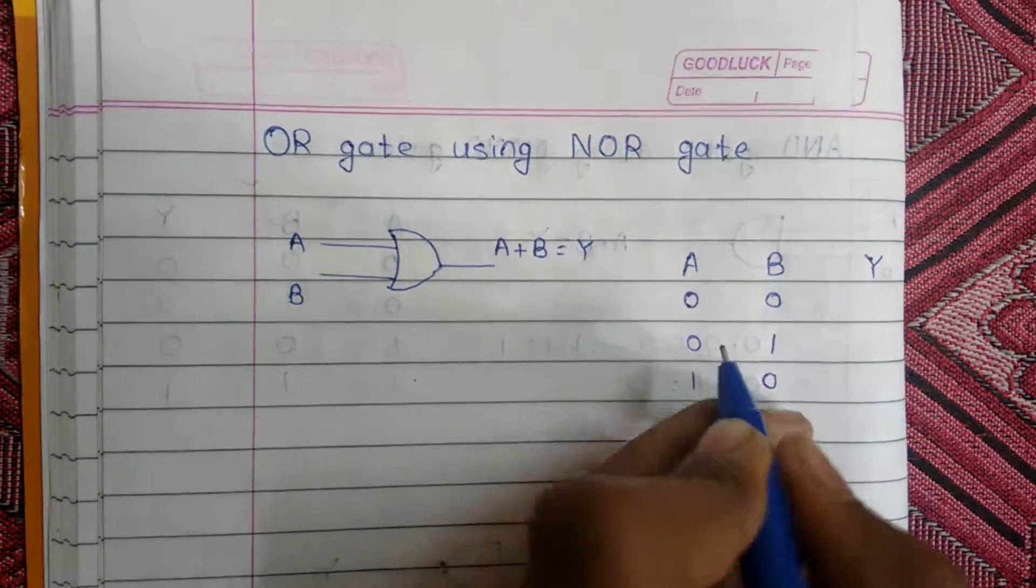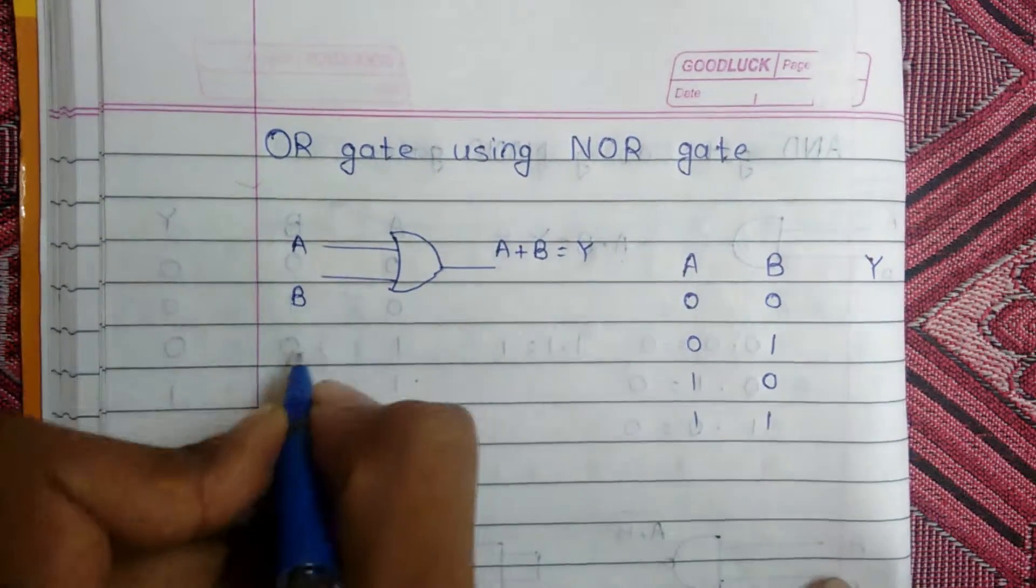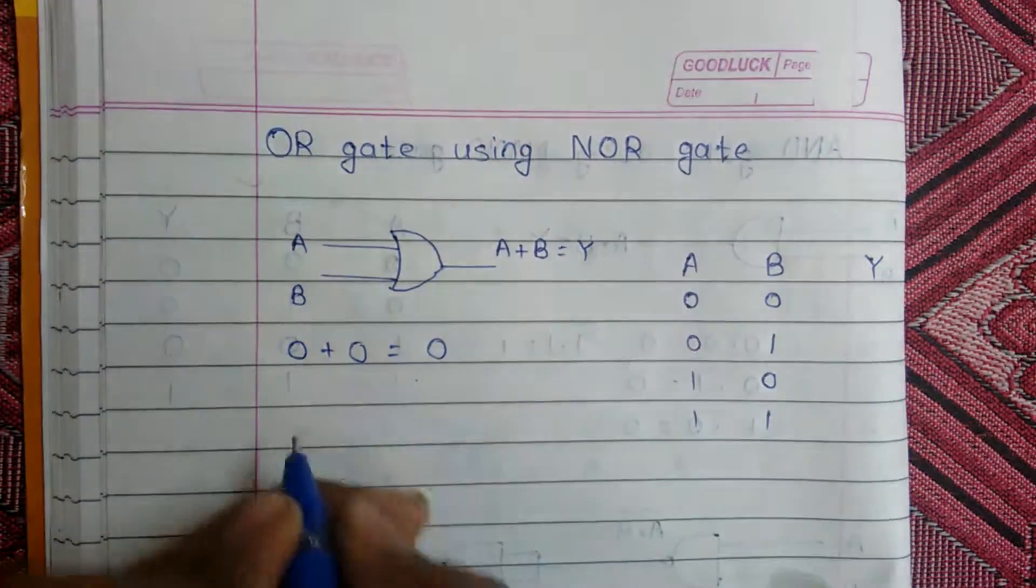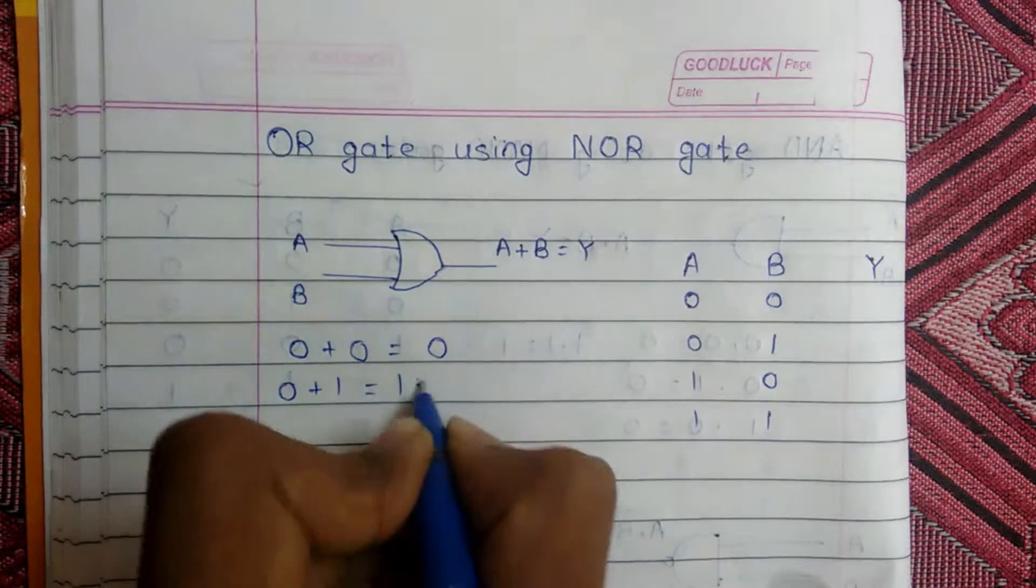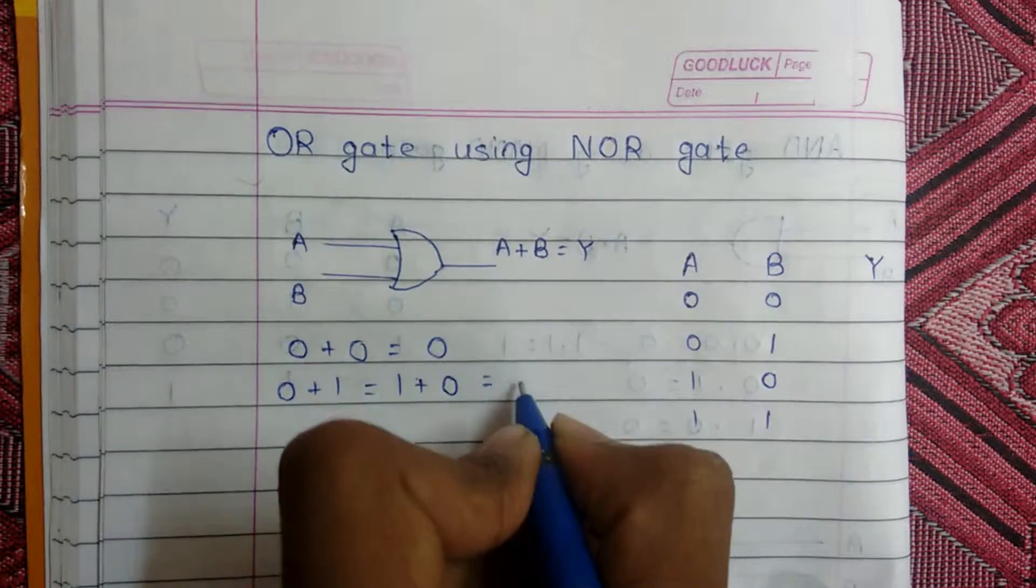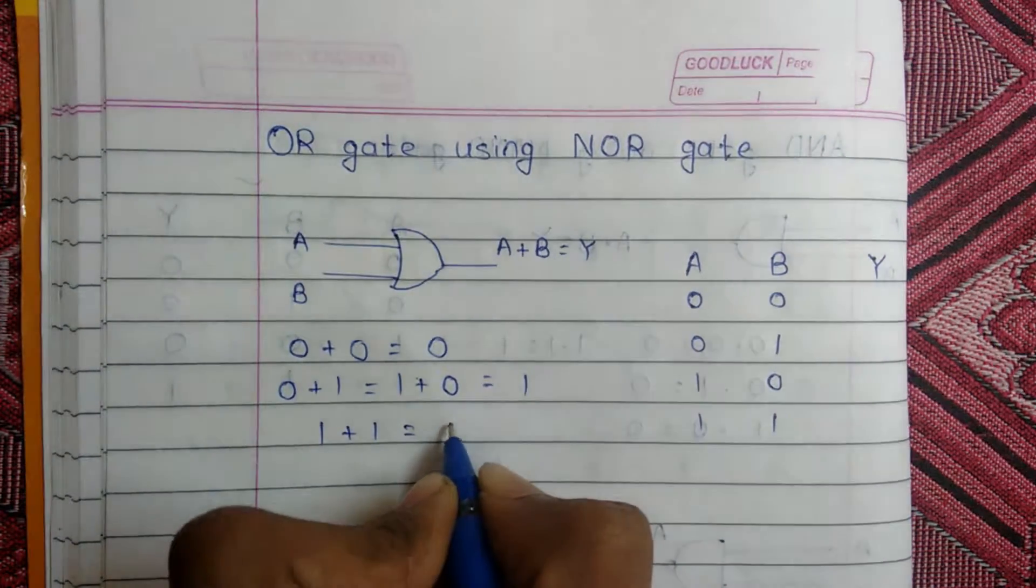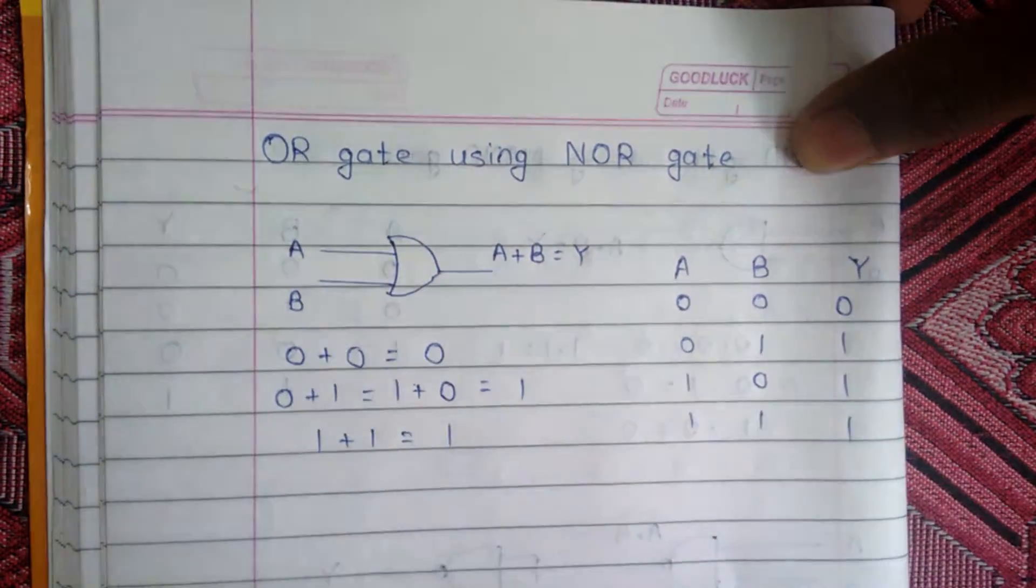We will directly go to the truth table. We know that output is A plus B. If both inputs are 0, then output is 0 plus 0 equal to 0. If any one input is 1, then output would be 1, and if both inputs are 1, then output would be 1. So our truth table becomes 0 1 1 1.